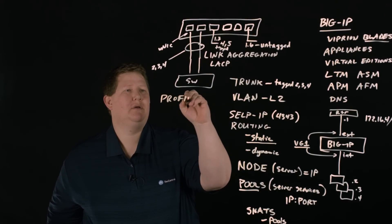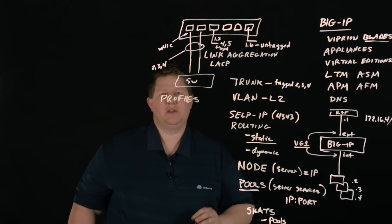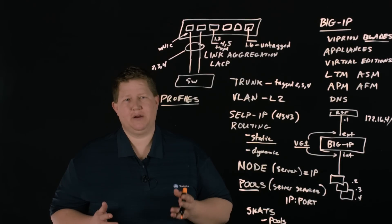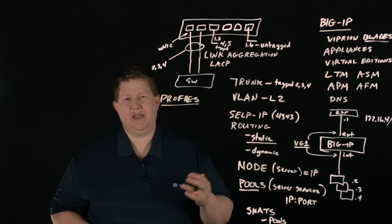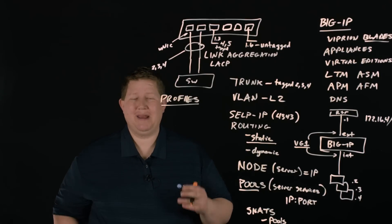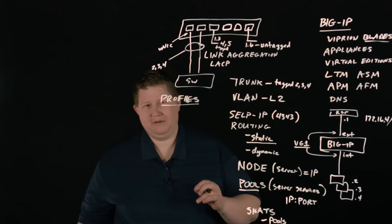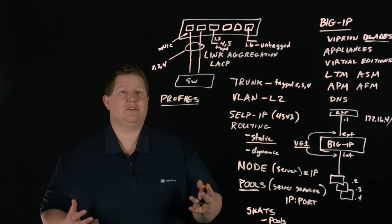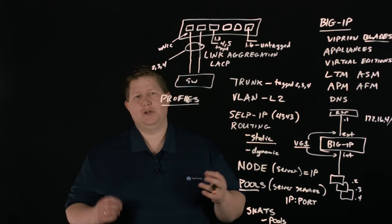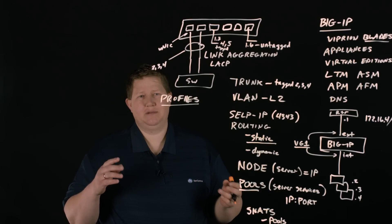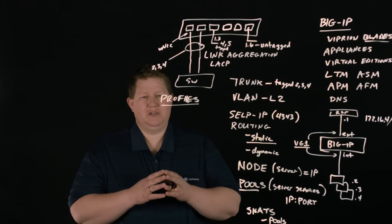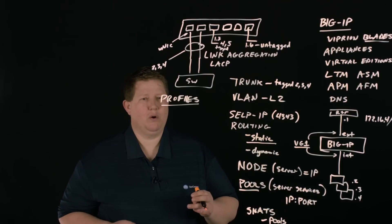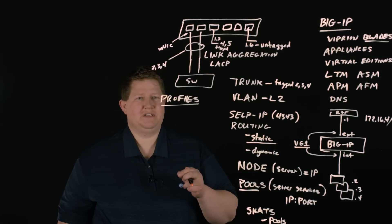The next level is profiles. Profiles allow you to customize the experience on each virtual server. If you have TCP characteristics for mobile versus desktop, high-speed versus ISDN or dial-up, the TCP characteristics would be very different. SSL characteristics from app to app are also very different. Rather than applying one massive global configuration, you can use various profiles — TCP, SSL, DNS — to get into the specifics of what you need for each application, so everything is tuned to make that application perform optimally for the characteristics of your clients.